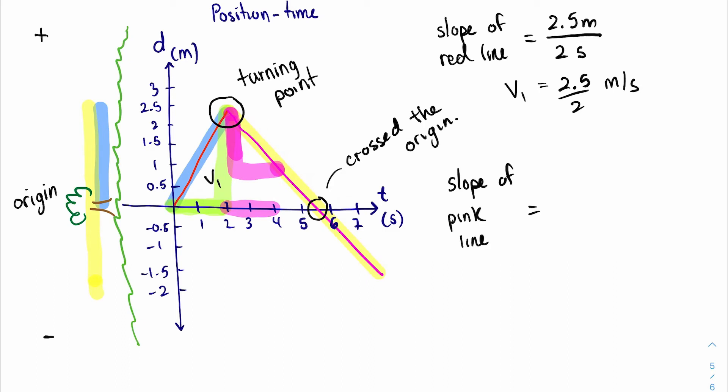How much distance was covered in that time? Roughly, let's see, 1.5 meters. So the slope of the pink line, in this case it decreased by 1.5 meters in two seconds, so the slope is negative 1.5 over 2 meters per second.